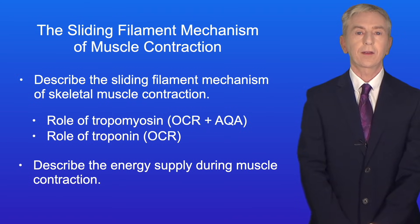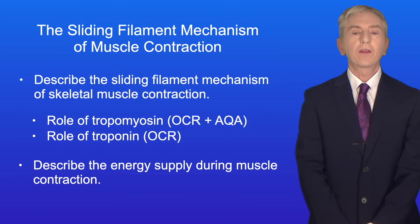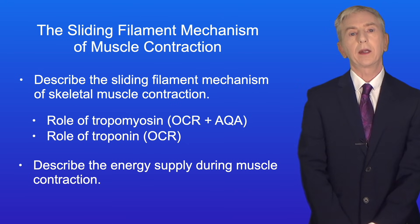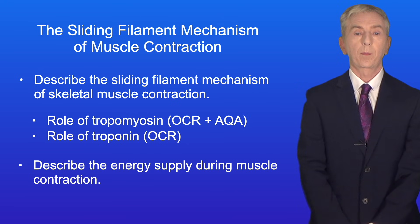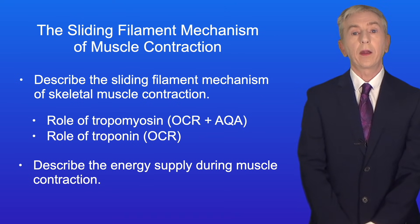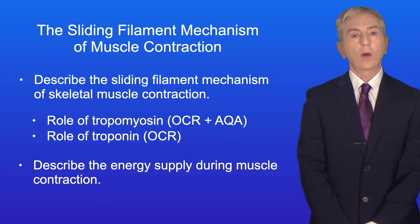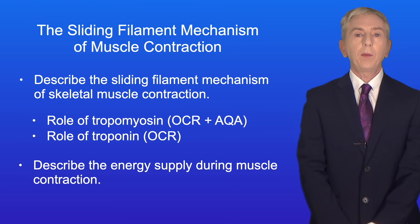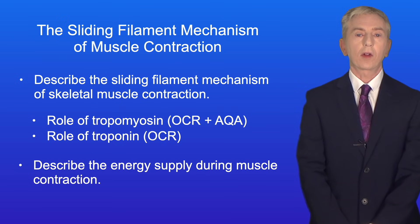Hi and welcome back to Free Science Lessons. By the end of this video, you should be able to describe the sliding filament mechanism of skeletal muscle contraction. If you're following the OCR spec, you need to describe the roles of tropomyosin and troponin. AQA students only need to describe the role of tropomyosin. You should then be able to describe the energy supply during muscle contraction.